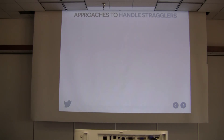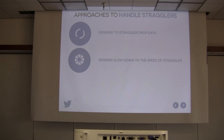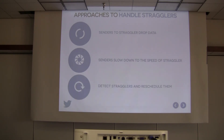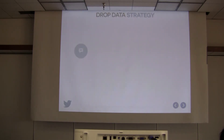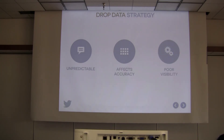To handle stragglers, we have three approaches. First, drop data to stragglers — but this is unpredictable and affects accuracy with poor visibility. Second, slow down the sender to the speed of the receiver — similar to TCP's window negotiation where sender and receiver settle on a window size so the sender transmits at the rate the receiver can absorb. Third, detect stragglers and reschedule them.